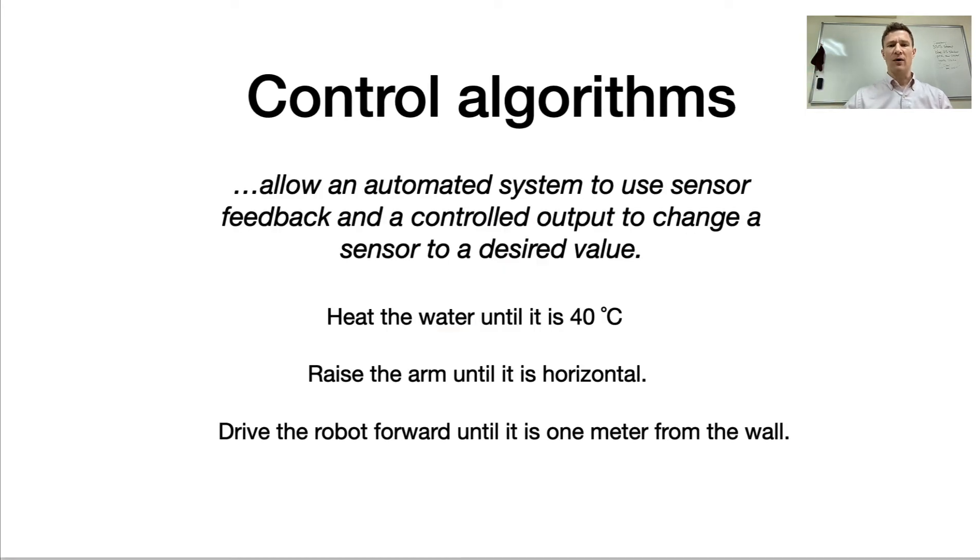Control algorithms are how you allow an automated system to use sensor feedback and a controlled output to change that sensor to the value that you want. And this could be heating a container of water to keep it at 40 degrees Celsius.